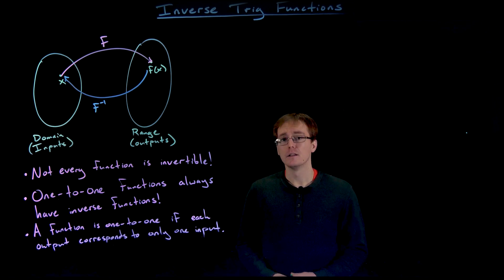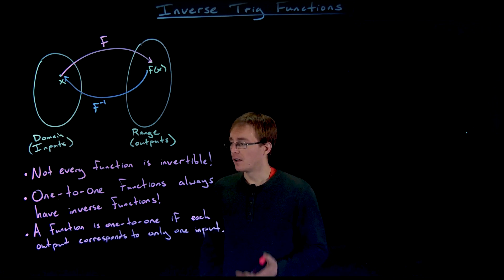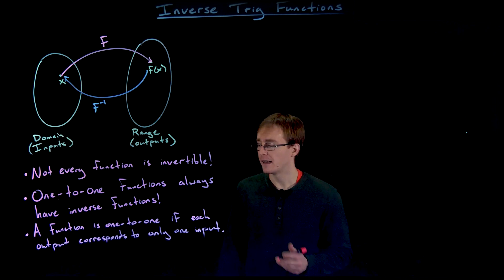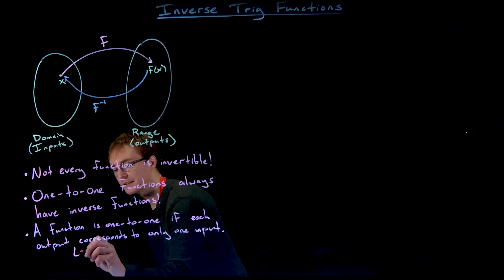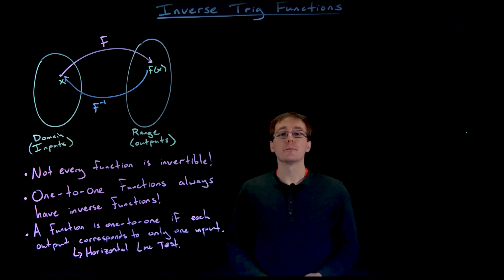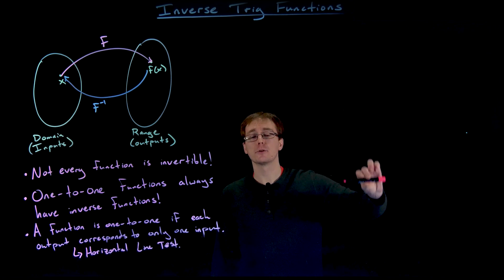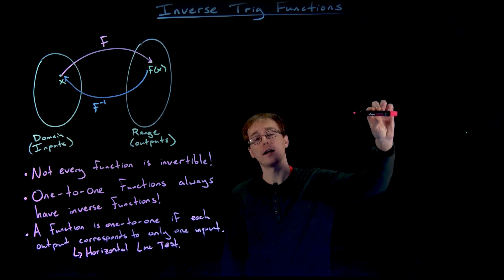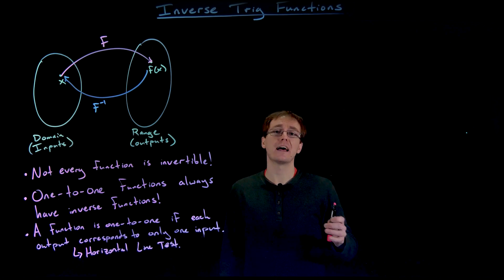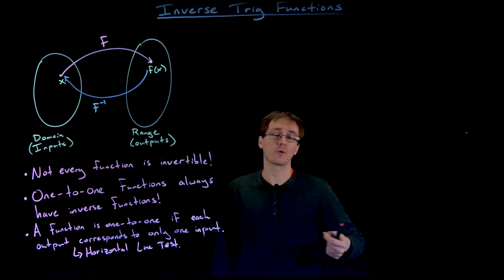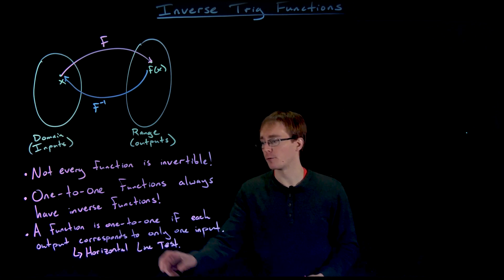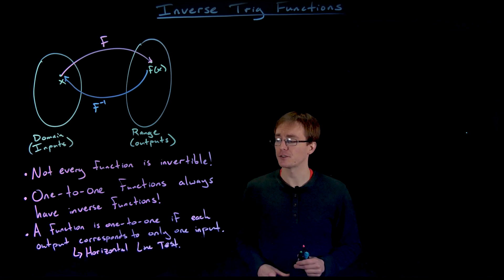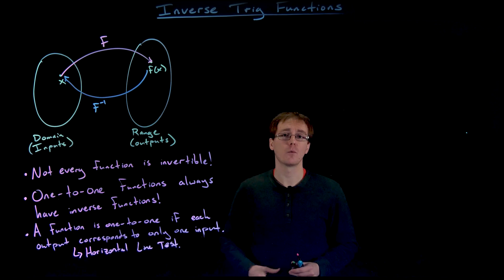Before we get to that, how do we know if a function is one-to-one? We have to check if every output corresponds to only one input. The easy way to do that is graphically using the horizontal line test. The way the horizontal line test works: a horizontal line represents one singular y value or one output. If that horizontal line crosses the graph of our function more than once, that means the function has that output occurring for more than one input. So if any horizontal line ever crosses our function more than once, then our function is not one-to-one.